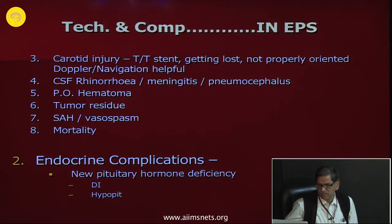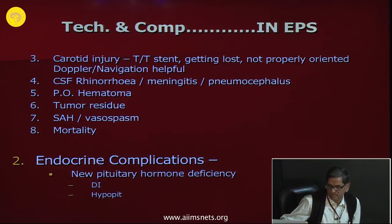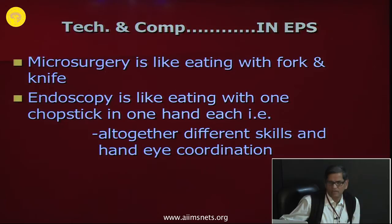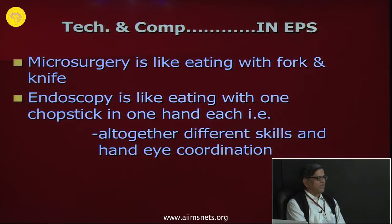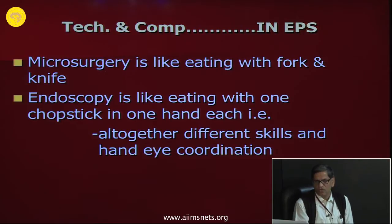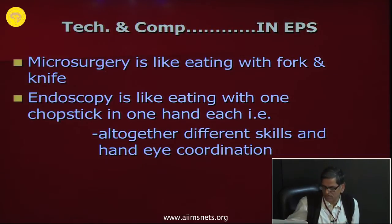Endocrine complications include development of new pituitary hormone deficiency — meaning normal pituitary tissue was removed — causing diabetes insipidus and panhypopituitarism. Microsurgery has been likened to eating with a fork and knife, whereas endoscopy is like having one chopstick in each hand — it is an entirely different skill and hand-eye coordination. This is why the learning curve exists and is the most important thing to learn.